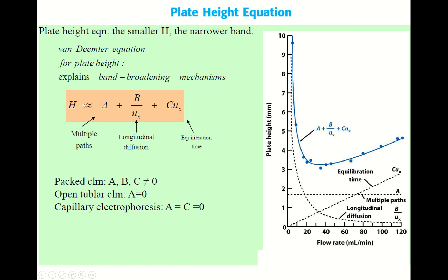The A term doesn't depend on flow rate. The B term is called the longitudinal diffusion term and is inversely proportional to flow rate. The A term is the multiple path term. The C term is called the equilibration time term and is proportional to flow rate. It is important to understand each term.